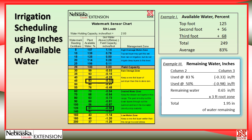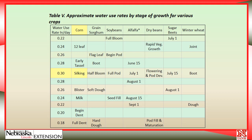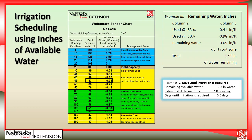This chart for Nebraska shows the amount of water a crop is expected to use on average during certain growth stages. For corn at silking stage in Nebraska, we'd expect about 0.3 inches of water per day. If the forecast calls for warm, windy, dry conditions, raise that number slightly; cool and cloudy, lower it. With 1.95 inches remaining and using 0.3 inches per day, we'd have about six and a half days before the field must be completely irrigated to avoid yield loss from moisture stress.